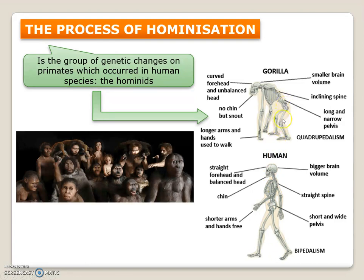In a gorilla, because they need to use their arms to walk, the spine is inclined. This inclined spine means the skull is not balanced, and it is impossible to have a round head with that type of connection between the skull and the spine. Because of that, we have a round head and a bigger brain volume — more space for our brain. The gorilla has a smaller brain cavity, and the brain is smaller.